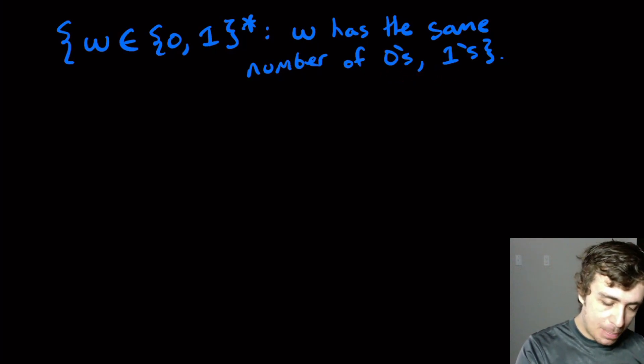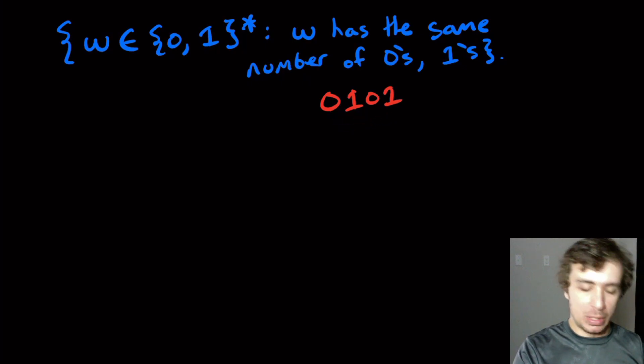So as an example, if I look at the string 0101, that clearly has the same number of zeros and ones in it.